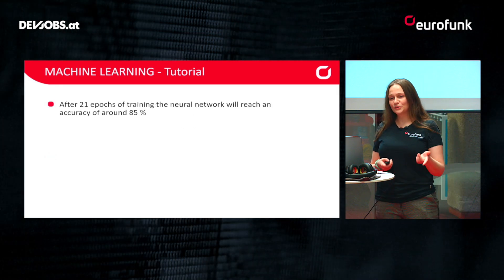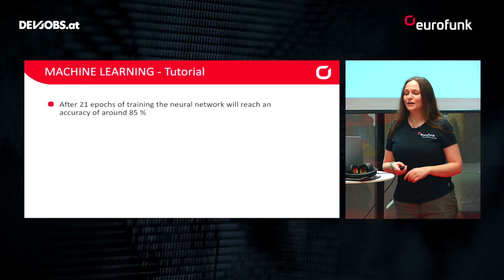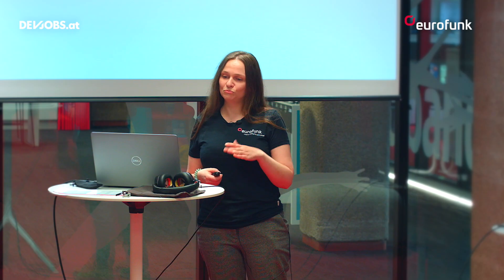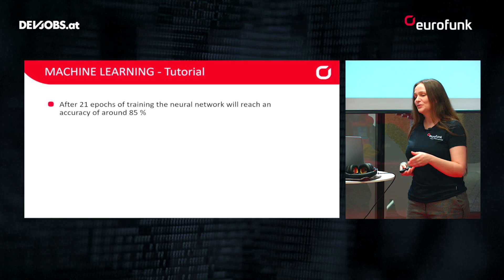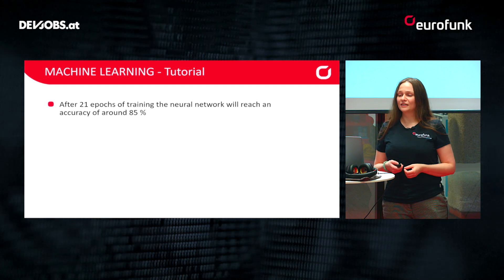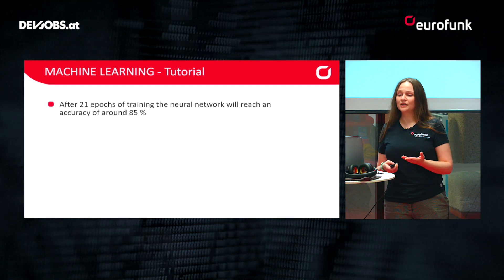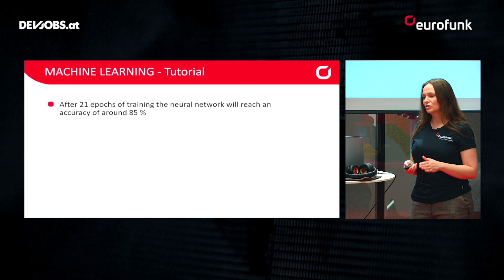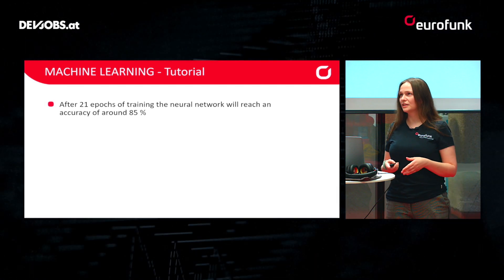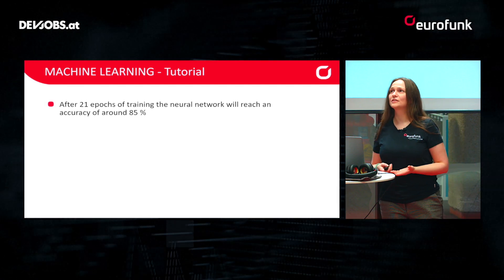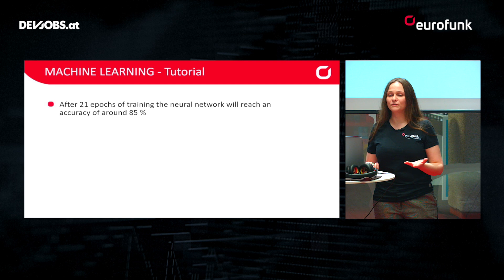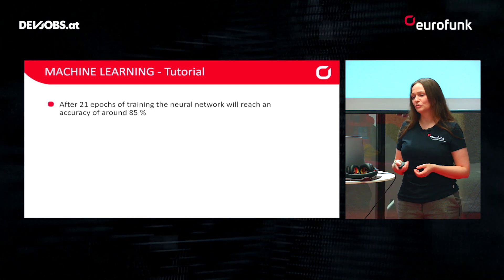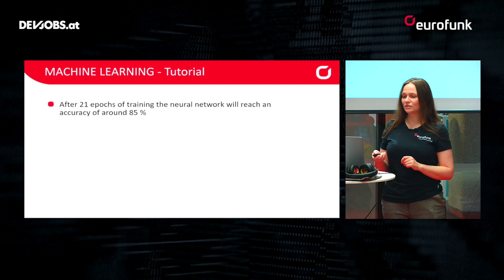When you run this tutorial, after already just 21 epochs — which is really fast — you get a neural network with an accuracy of 85%. So when you train something and are above 80%, you could already be pretty glad. This is a really nice result.